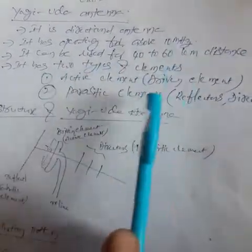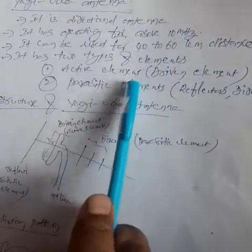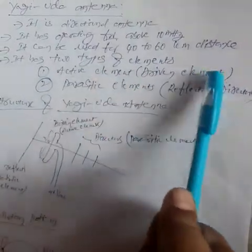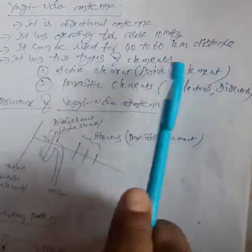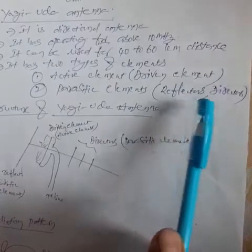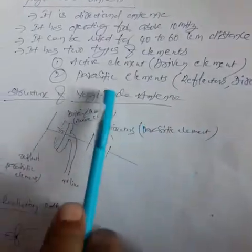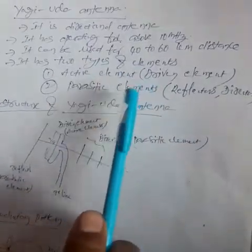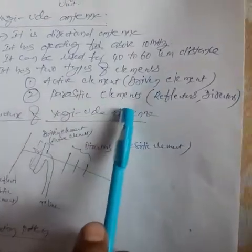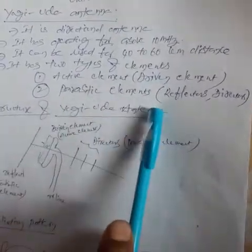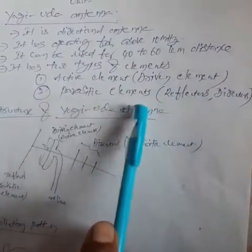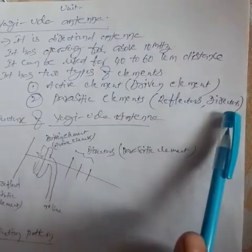The Yagi-Uda Antenna has two types of elements: first, active elements, and second, parasitic elements. Active elements are the driven elements. Parasitic elements are reflectors and directors. Active elements are connected to the power supply, while parasitic elements are not connected to the power supply.